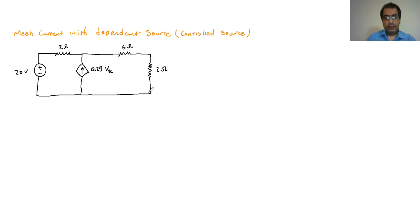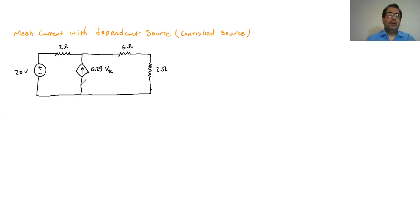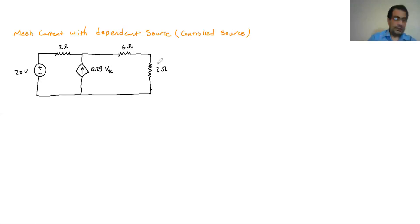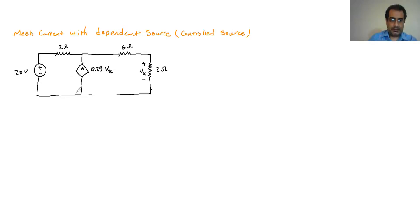In the previous section we talked about the independent current source, where the current was constant. Now the current is not constant — it's a function of Vx, where Vx is the voltage across this particular resistance. The current in this wire is going to be a function of that voltage, with the assumed positive and negative polarity.